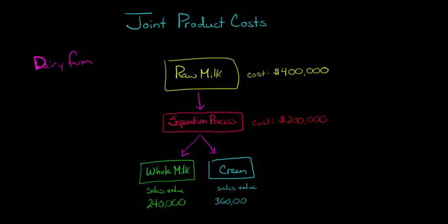Let's say we could sell the cream for $360,000 and we could sell the whole milk for $240,000. They have different prices, but both of these products — the whole milk and the cream — have in common that they both came ultimately from the same cows and the same separation process.